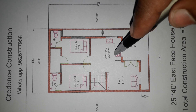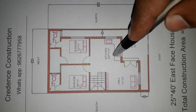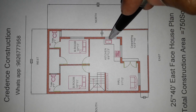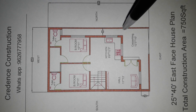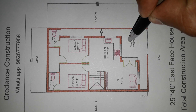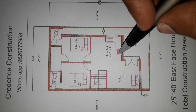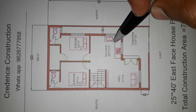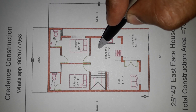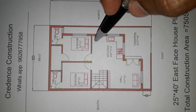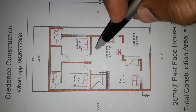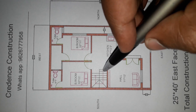Kitchen size is 9 feet 9 inches by 12 feet 3 inches — an open kitchen placed as per Vastu. It includes a gas stove, sink, kitchen dining area, and kitchen store.